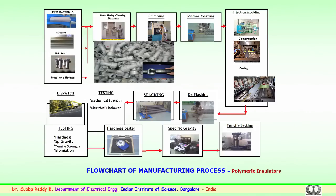Apart from mechanical and electrical tests, other chemical and physical tests are carried out, including specific gravity, hardness testing, tensile strength, and elongation of the rubber. Chemical and surface change tests are also performed. Upon clearance after mechanical and electrical testing, these insulators are dispatched to utilities for use in transmission, distribution, or traction purposes.